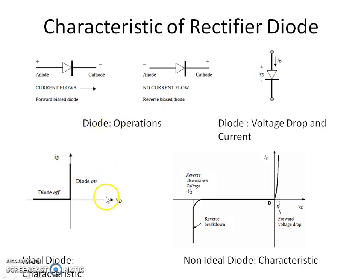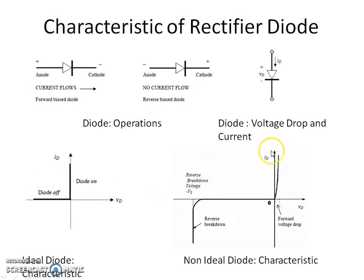This is the characteristic of the ideal diode: during forward bias the diode is considered on with no voltage drop; during reverse bias it is considered off with no current flow. This is the characteristic of the practical diode, where some voltage drop occurs in forward bias and a small leakage current flows during reverse bias.